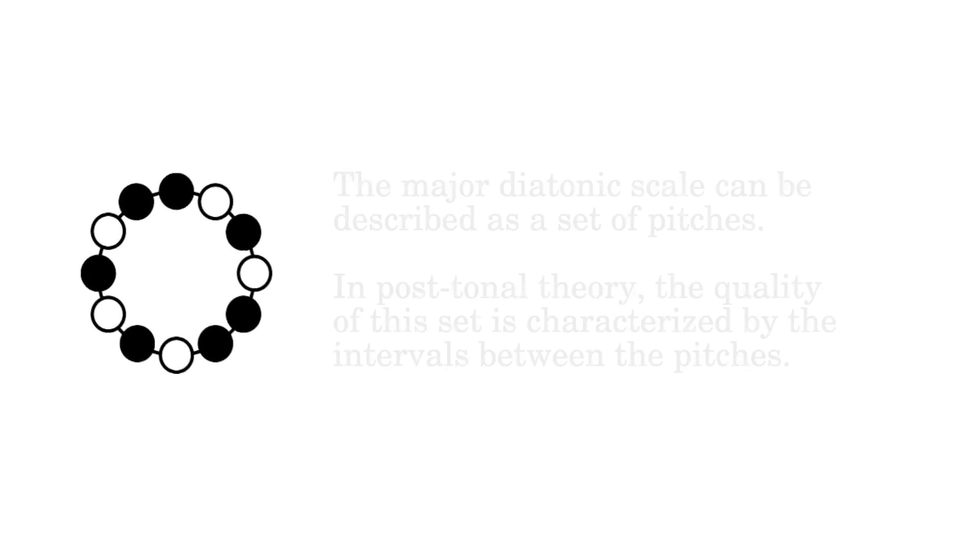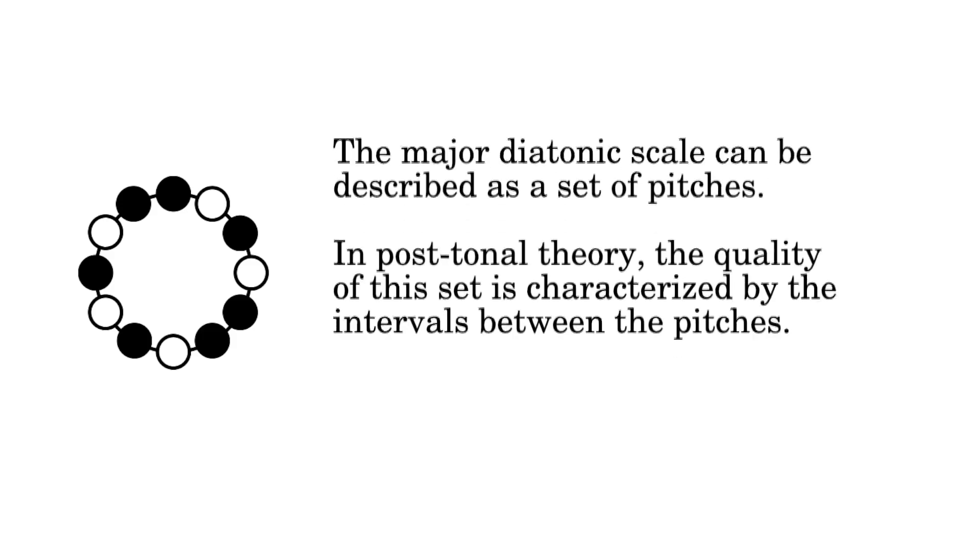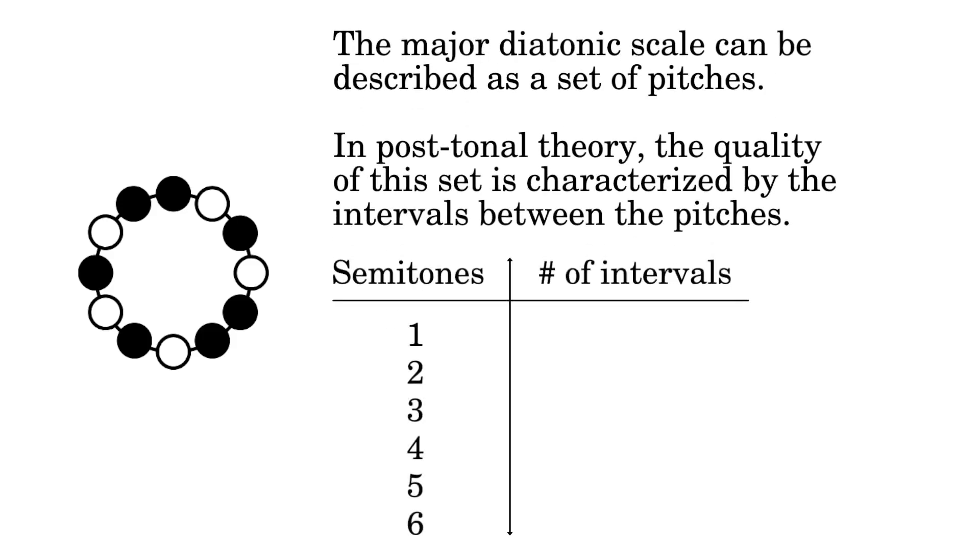The major diatonic scale can be described as a set of pitches. In post-tonal theory, the quality of this set is characterized by the intervals between the pitches. Counting the intervals that are a distance of one semitone, we see there are two of them, here and here.